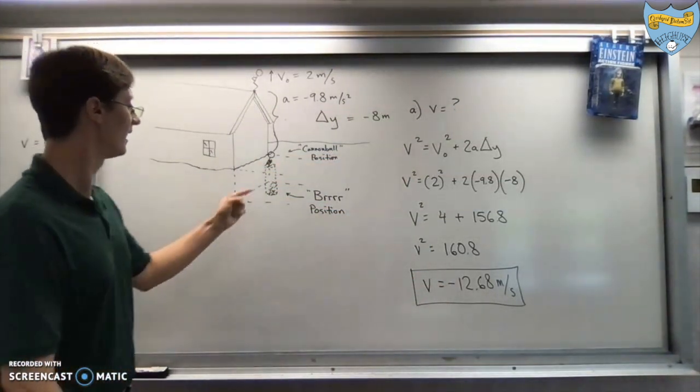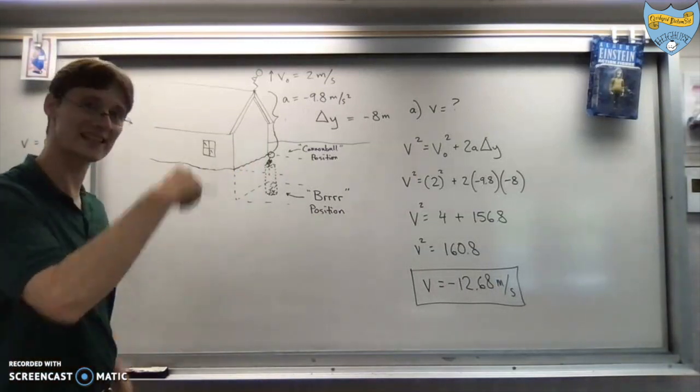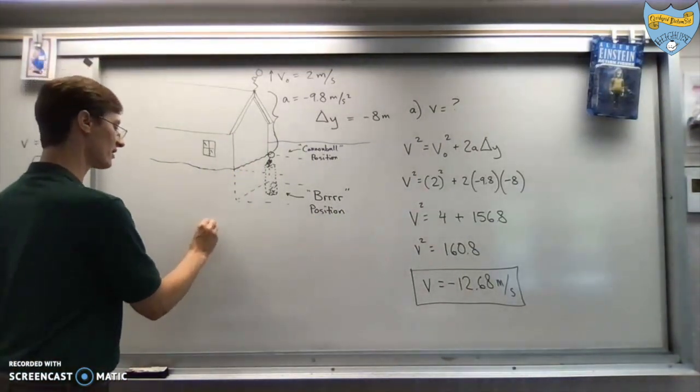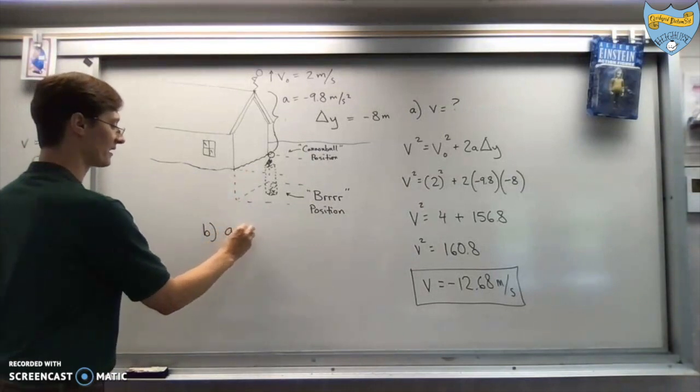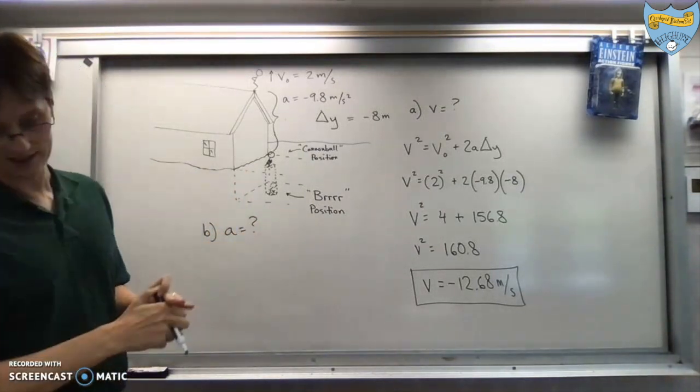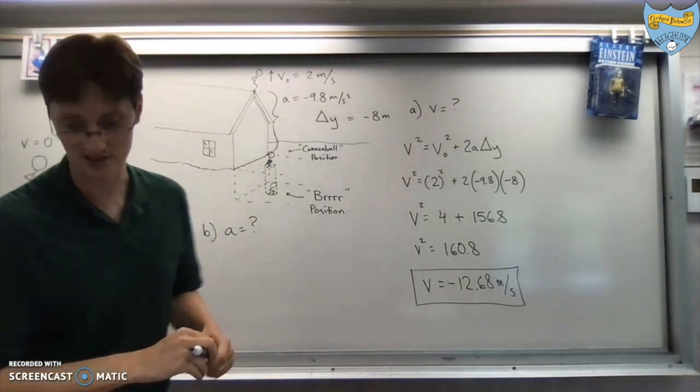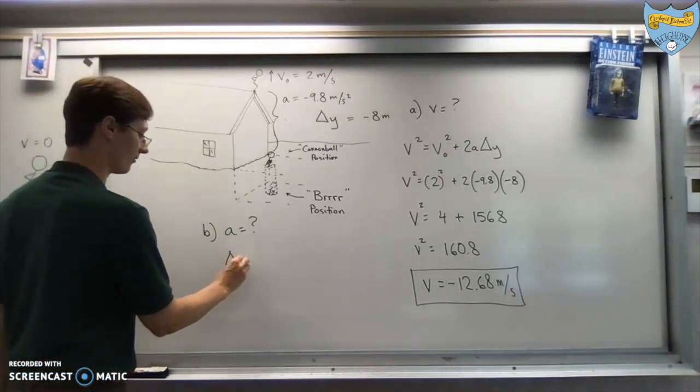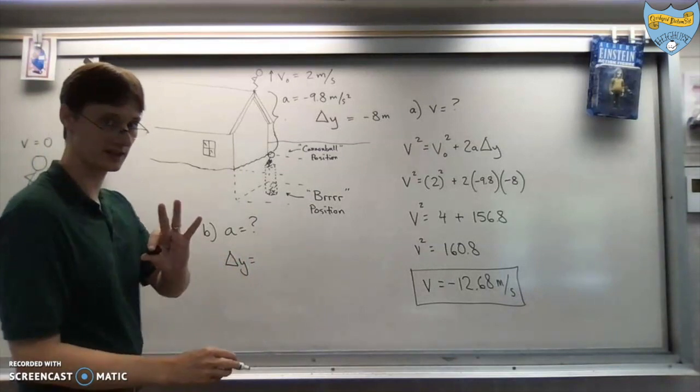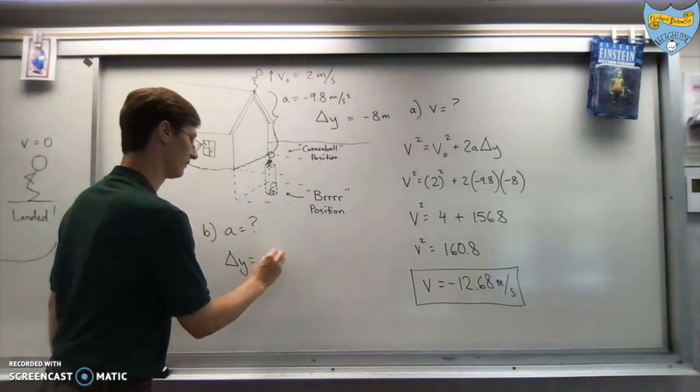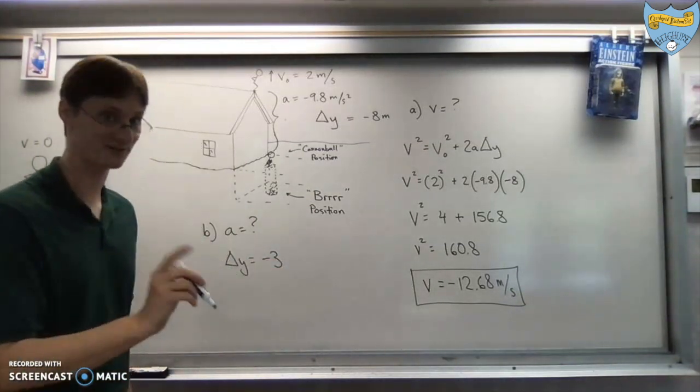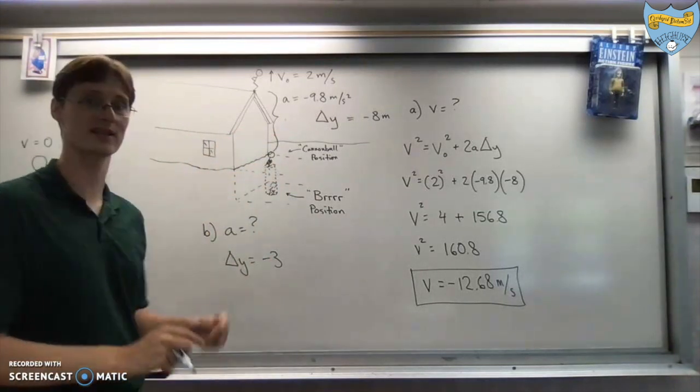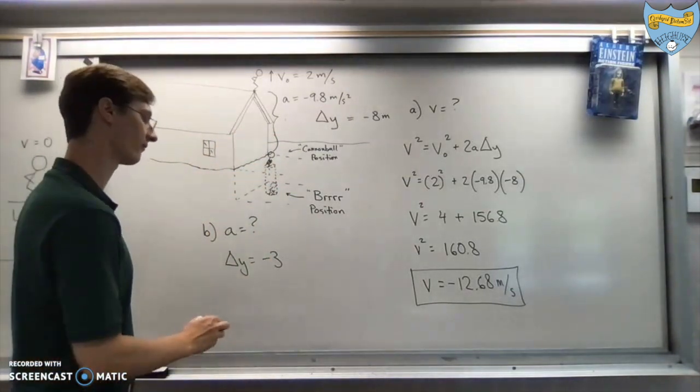All right. Next bit. For the second phase of this fellow's motion, you're supposed to figure out what his acceleration is, given that he ends up plowing three meters down into the snow. Now, once again, his displacement's negative. He goes three meters down into the snow.